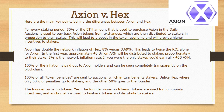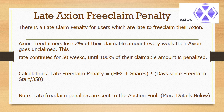The founder owns no tokens — yes, the founder owns no tokens. Tokens are used for community incentives, and auction ETH is used to buy back tokens and distribute to stakers. There is a late Axion free claim penalty: Axion free claimers lose 2% of their claimable amount every week their Axion goes unclaimed. This rate continues for 50 weeks, until 100% of their claimable amount is penalized.